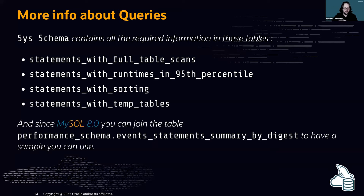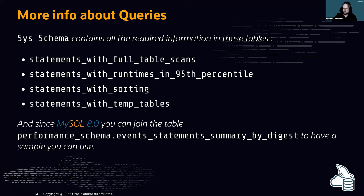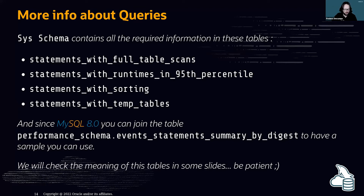Since MySQL 8, you can also join with the performance_schema events_statements_summary_by_digest table to get an exact sample of a query. All queries are stored as digests with parameters removed, but if you want an example of the actual query text, it is possible to retrieve that in MySQL 8.